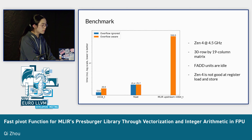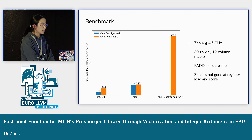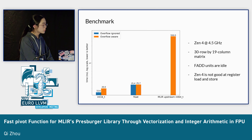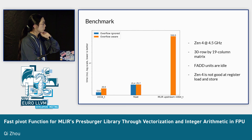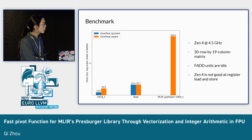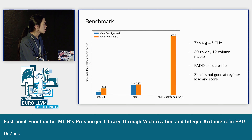I selected a 19-column example from the FPL paper benchmark toolkit and implemented a detached version of the pivot function for all three data types. I measured the performance using Google Benchmark on a Zen 4 desktop locked at 4.5 GHz. It is discovered that both the INT16 version and the float version are much faster than the upstream. The overflow overhead for floating point is a much smaller ratio compared to INT16. Unfortunately, INT16 is still faster — a few nanoseconds faster than float.